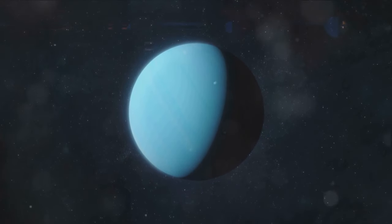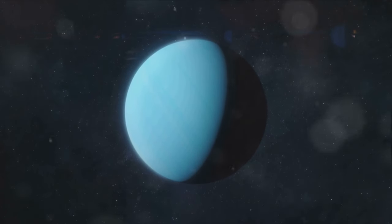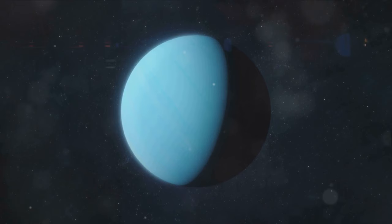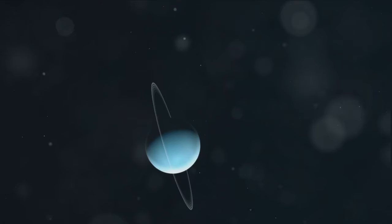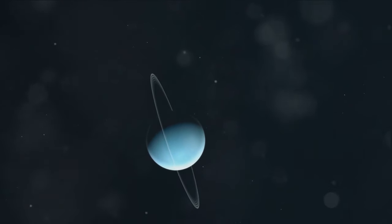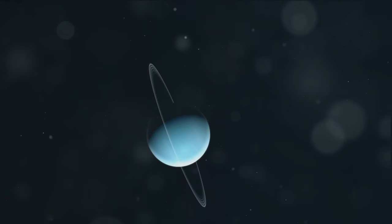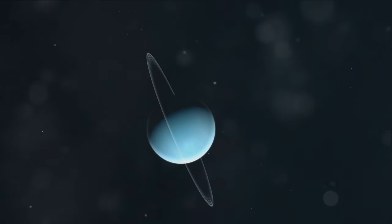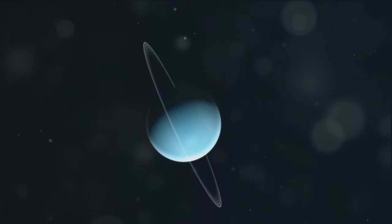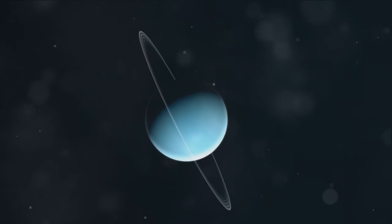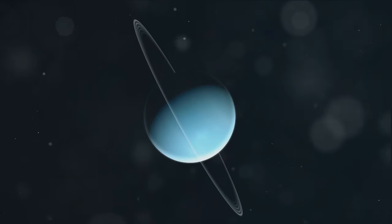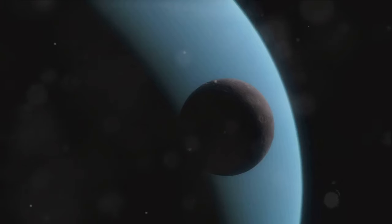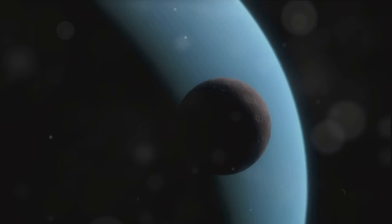Uranus is a blue-green beauty, a sight to behold. Its existence was confirmed by Sir William Herschel in the 18th century, making it the first planet to be discovered with the help of a telescope. Interestingly, it was initially mistaken for a star due to its faint glow. However, its planetary status was established upon further observation, marking a significant milestone in human understanding of the cosmos.